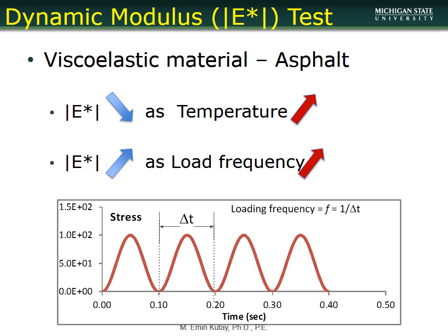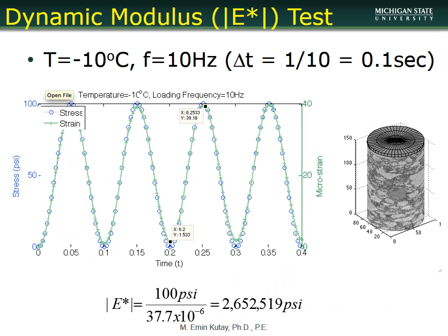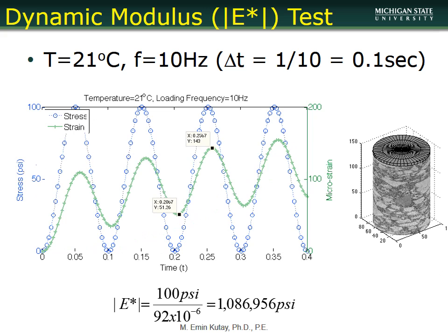Loading frequency in a cyclic test is one over delta-T, where delta-T is the period of the cycle. This is related to traffic speed — the higher the vehicle speed, the higher the frequency. For example, dynamic modulus can go from 2.6 million psi down to 1 million psi as conditions change.